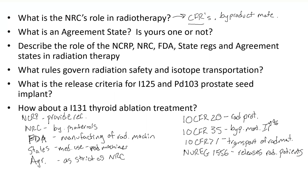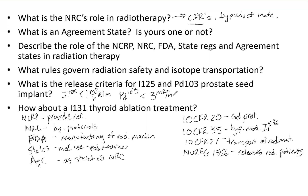NUREG 1556 covers the release of radioactive patients. NUREGs help clarify specific CFR regulations without creating a whole new CFR. For release criteria: I-125 is less than one mR per hour at one meter. Palladium-103 is less than three mR per hour at one meter.